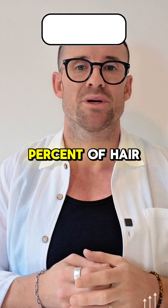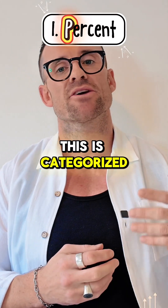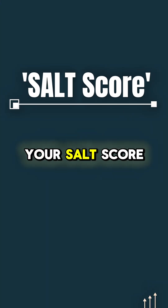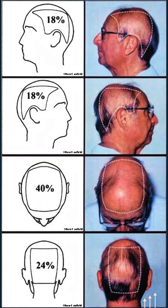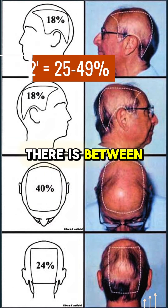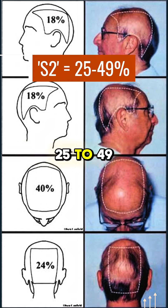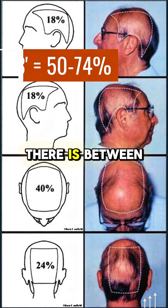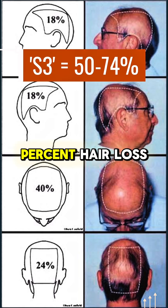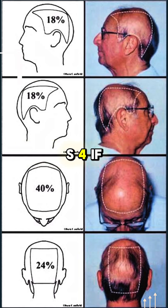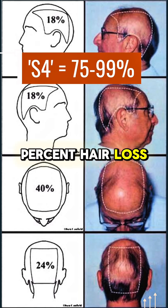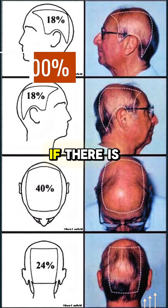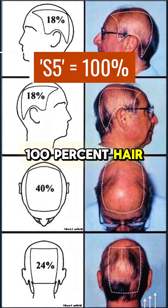Number 1 is the percent of hair missing. This is categorized using the SALT score. Your SALT score will be S1 if there is less than 25% hair loss, S2 if there is between 25 to 49% hair loss, S3 if there is between 50 to 74% hair loss, S4 if there is between 75 and 99% hair loss, and S5 if there is 100% hair loss.